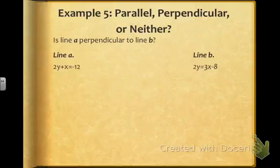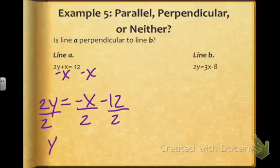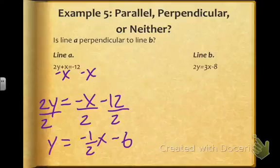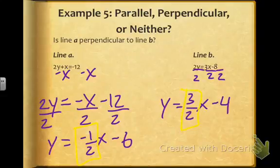In our last example, neither equation is in slope intercept form. For the first one, subtracting x from both sides gives 2y equals negative x minus 12, then dividing each term by 2 gives y equals negative 1 half x minus 6. For the second, dividing each term by 2 gives y equals 3 halves x minus 4. They definitely don't have the same slope, and they also don't have opposite reciprocal slopes, so in this case it is none of the above — neither parallel nor perpendicular.